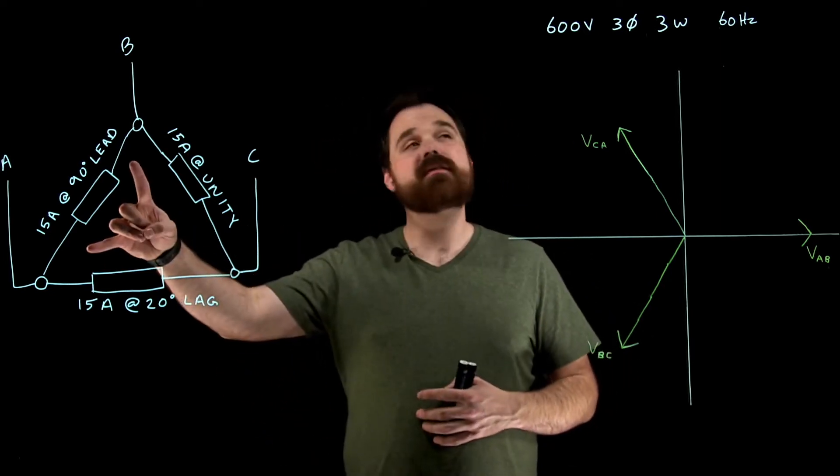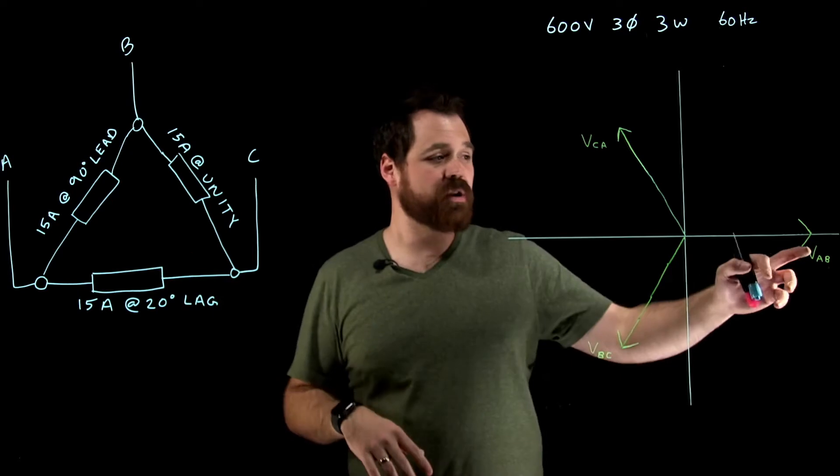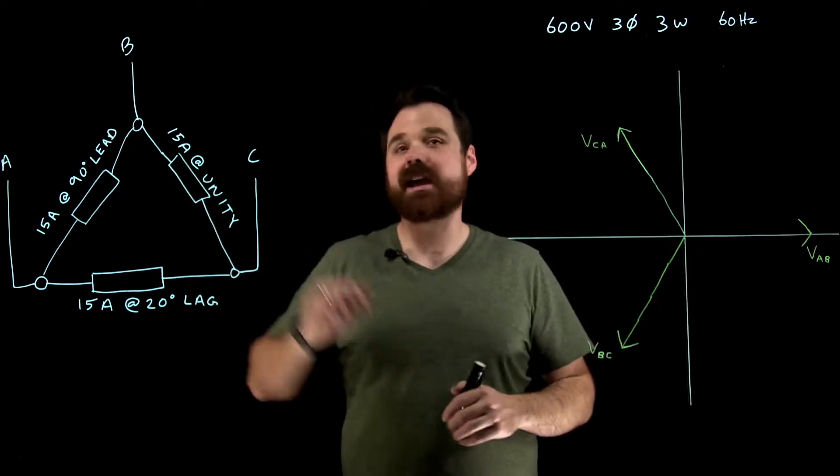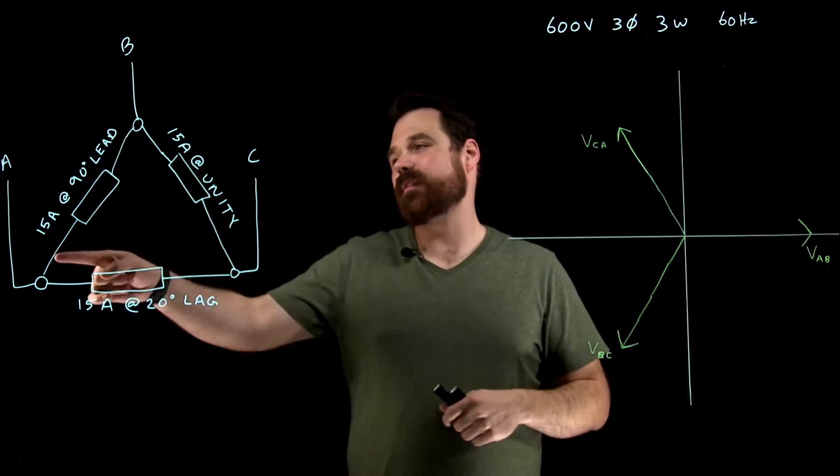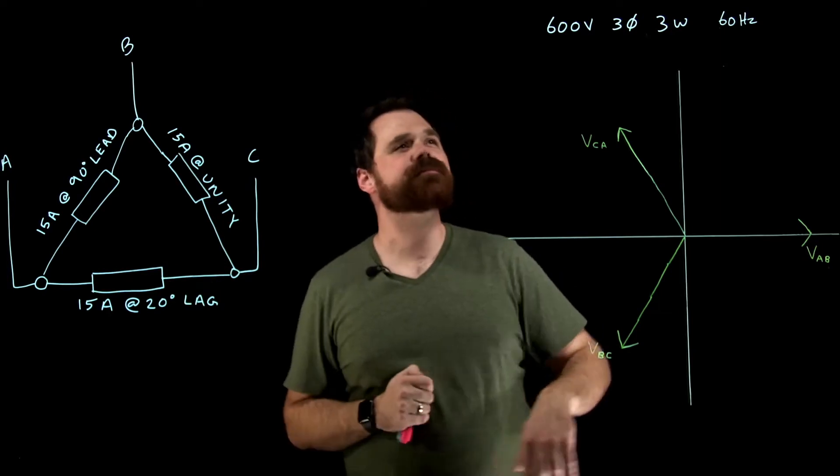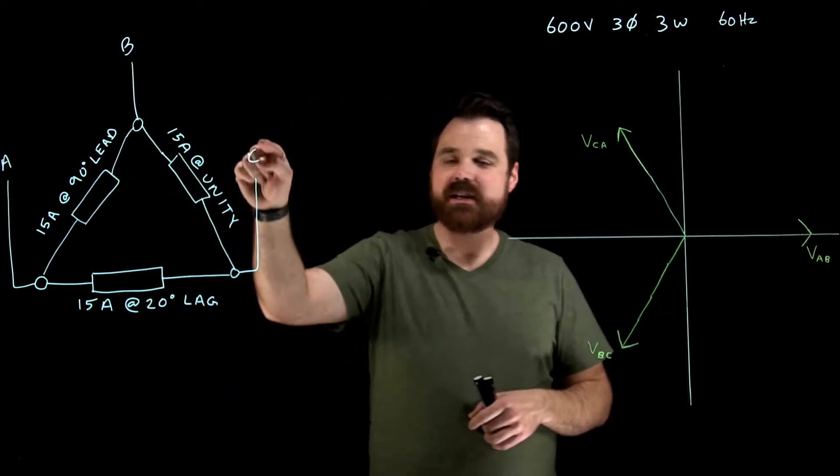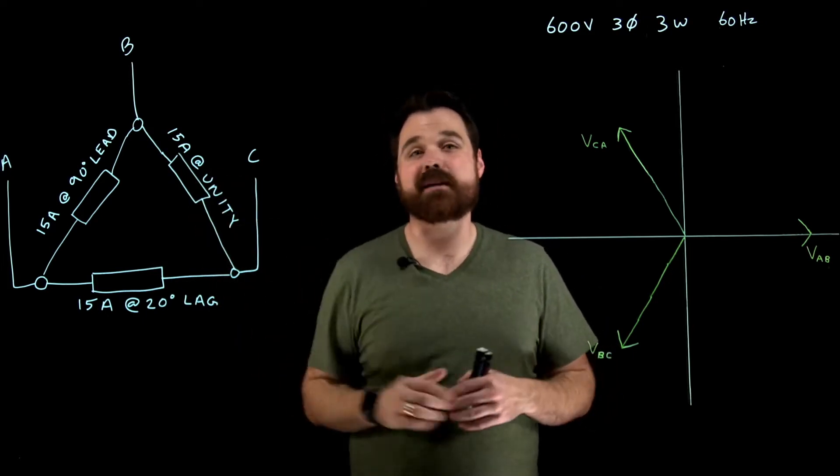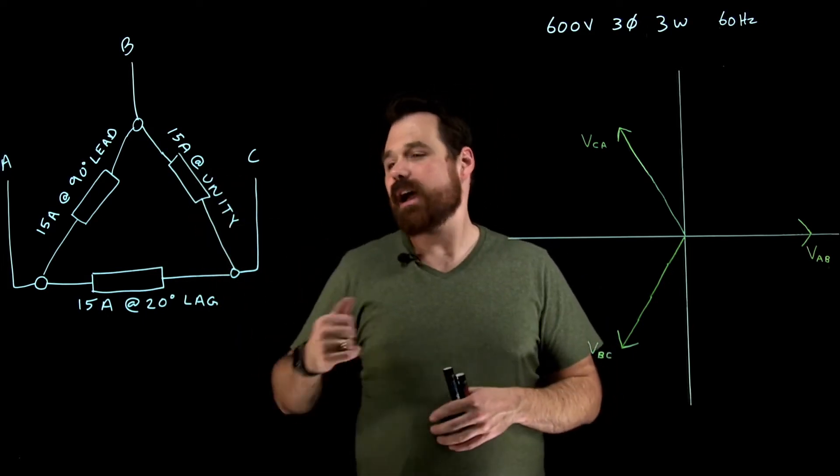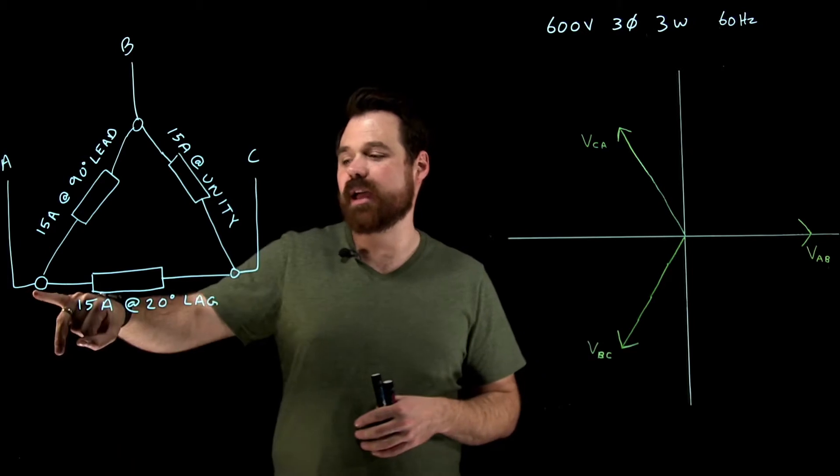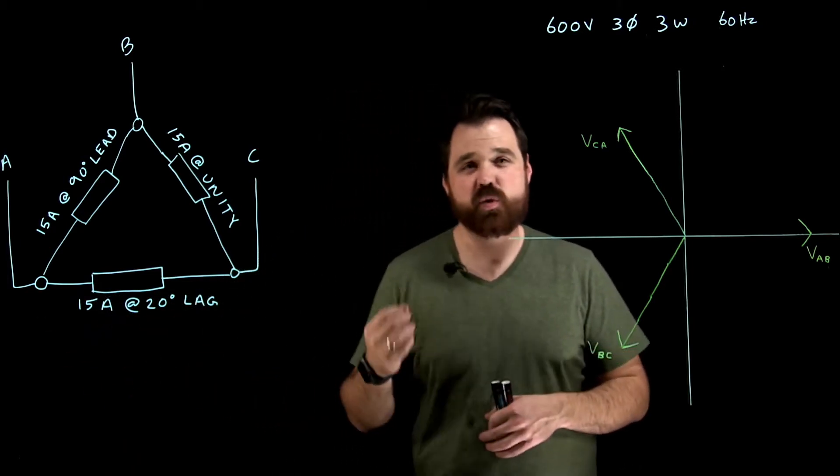So here, in phase A, which would be with my V A to B right there, I see 15 amps at a 90 degree lead. In phase B, which goes from B to C, I see 15 amps at a unity power factor. And then from C to A, I see 15 amps with a 20 degree lag.